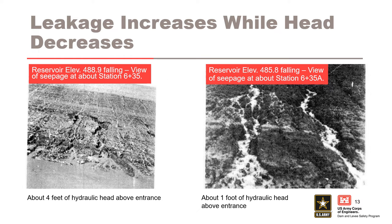Leakage increased while the head decreased. In the photo on the left, the reservoir is at elevation 488.9 feet and falling, about four feet of hydraulic head above the upstream entrance location. In the photo on the right, the reservoir is at 485.8 and falling, about one foot of hydraulic head above the upstream entrance location. Although the hydraulic head difference decreased by about three feet between the two photos, the leakage appears to increase significantly, indicating the erosion pathways are increasing in size.